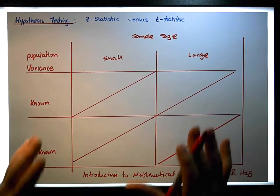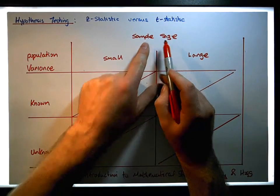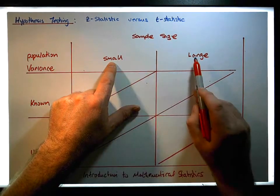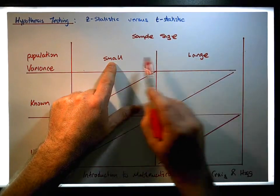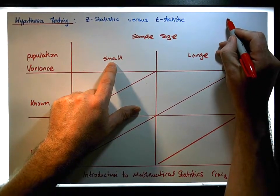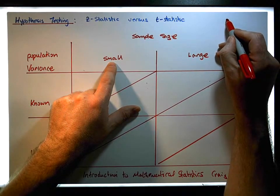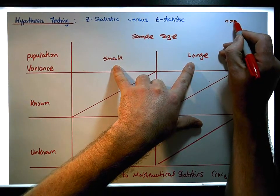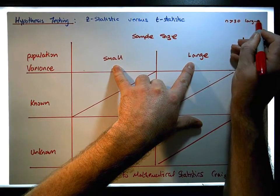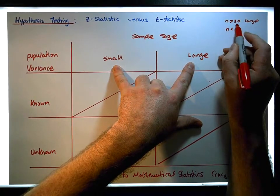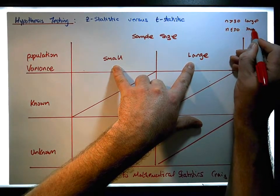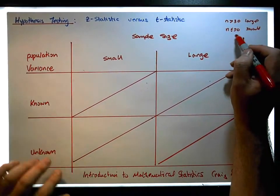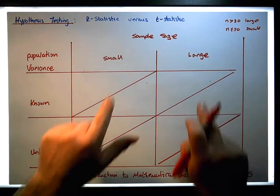We've got two constraints we're going to put on the problem. The first is in relation to sample size — whether the sample drawn randomly from a population can be considered small or large. Typically, if n is greater than 40, we mean large; if n is less than or equal to 40, we say small. Some texts use 30 as the threshold, but that's what we mean by small and large.